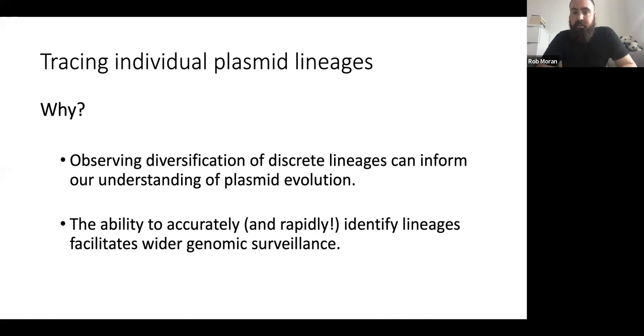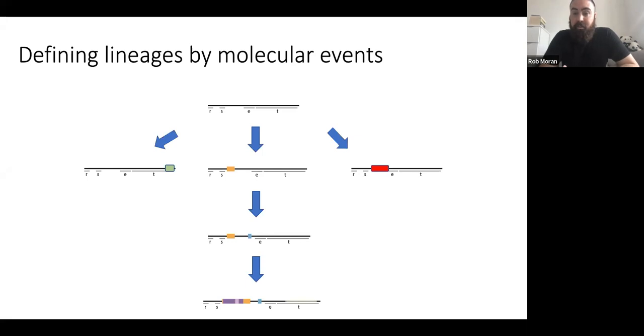What I've been really interested in is being able to trace individual plasmid lineages. The reasons why we'd want to do this are clear. First, by observing a discrete plasmid lineage over its evolutionary timeframes, we can actually learn a lot about how plasmids evolve. Second, the ability to accurately and rapidly identify lineages facilitates wider genomic surveillance, which is important in terms of antibiotic resistance.